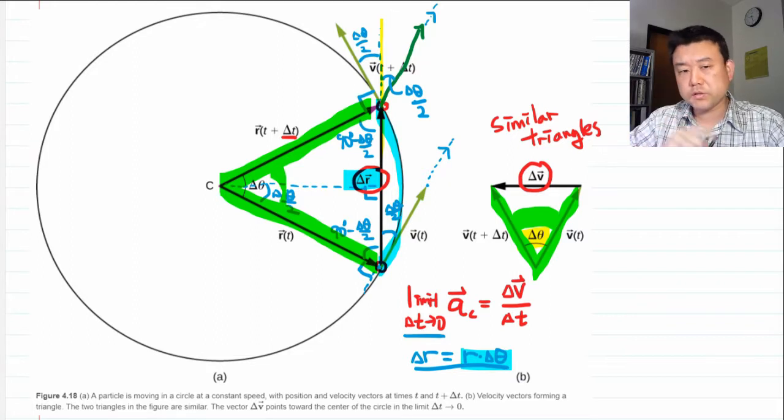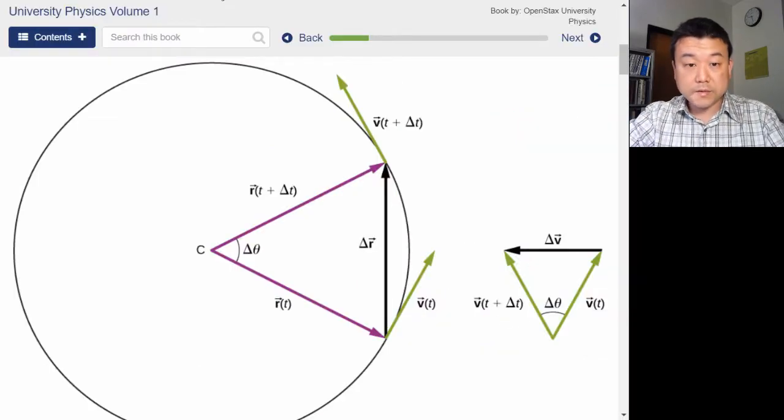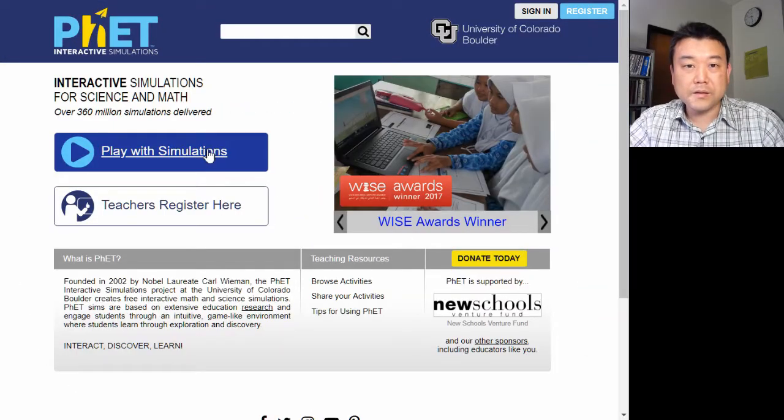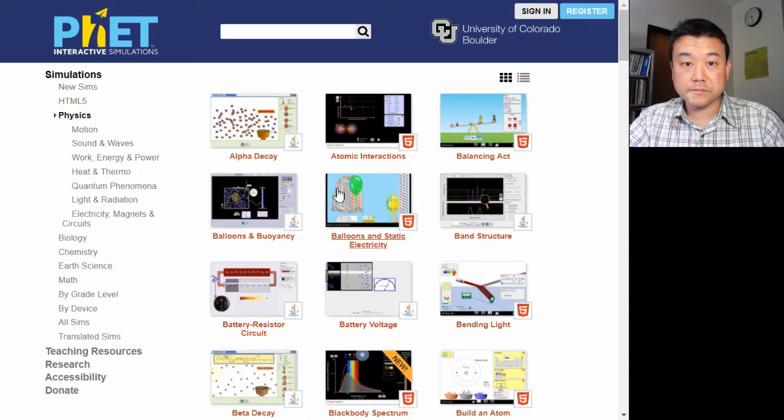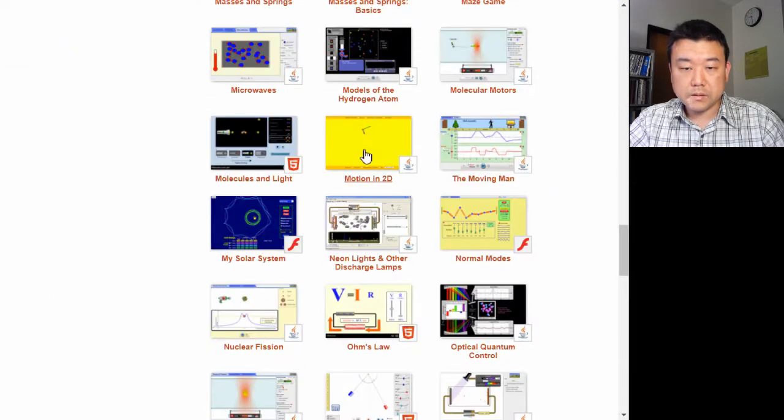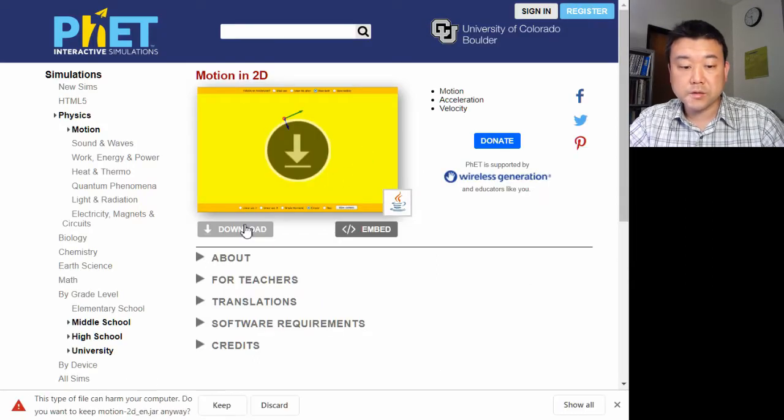Finally, I want to point out one resource to help you start developing intuition for centripetal acceleration. This is a website you have seen before, PHET. And the simulation is called Motion in 2D. It's a Java simulation, so you need to have Java installed in order to be able to run this simulation.